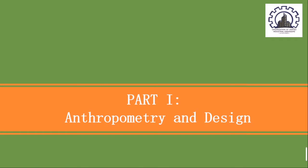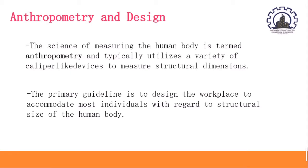In Part 1, Anthropometry and Design, the primary guideline is to design the workplace to accommodate most individuals with regard to structural size of the human body. Anthropometry is rooted from the word anthropos, which means man and human, and meter, which means to measure. Anthropometry is the science of measuring the human body and typically utilizes caliper-like devices to measure structural dimensions, examples of which are stature and forearm length.